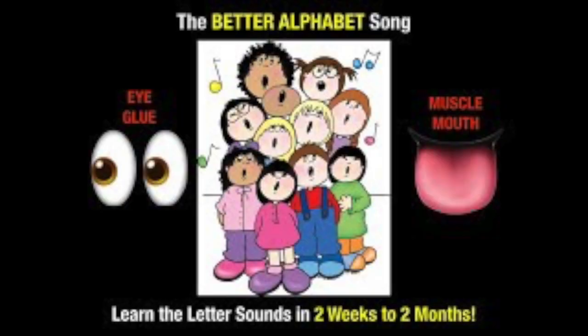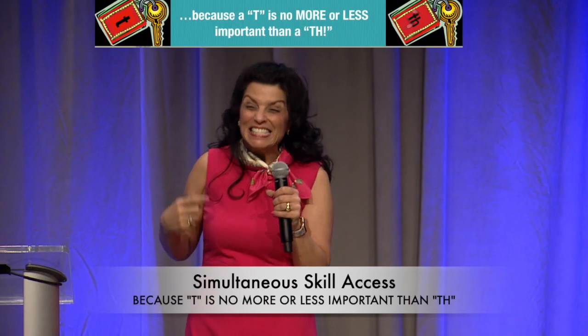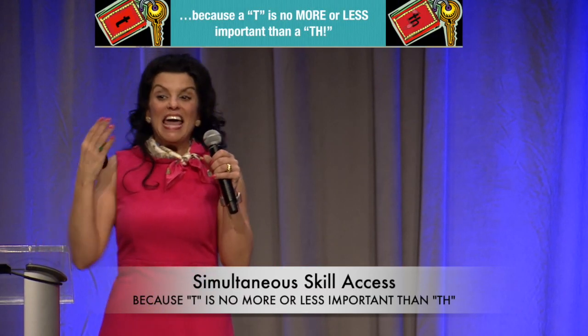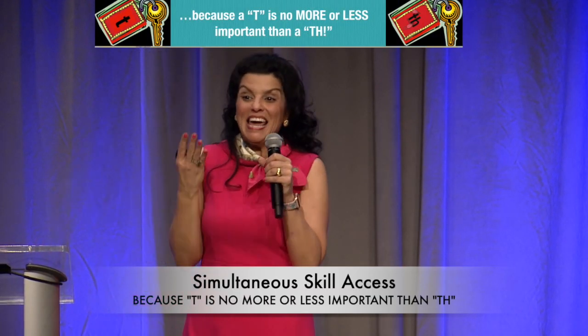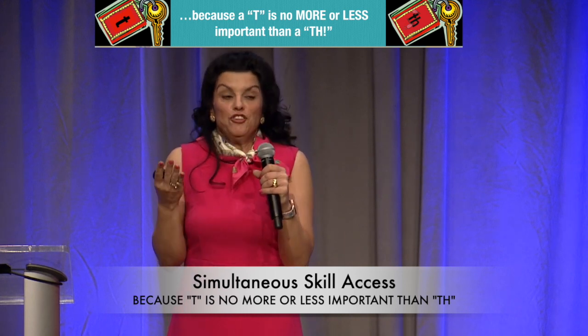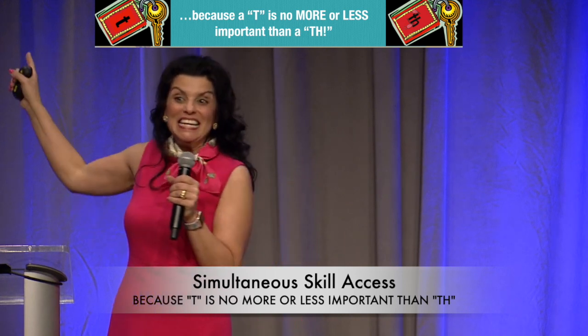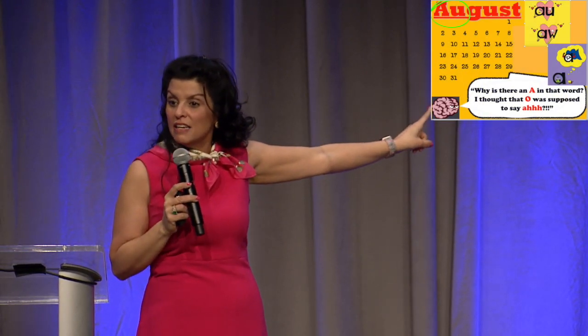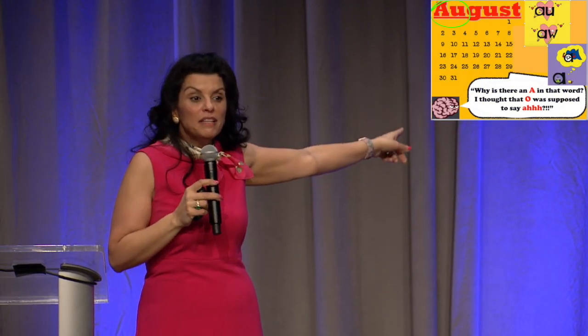Even that better alphabet I was mentioning earlier — while you're doing that, and I said that takes two weeks to two months — you are simultaneously tossing out secrets. Because if any kid is paying any attention to what you say, and you've just said 'A says ah' or 'A says apple, ah-ah-ah,' and then you march two feet to your calendar and you show them the word August, you lose all credibility.